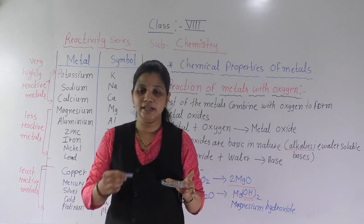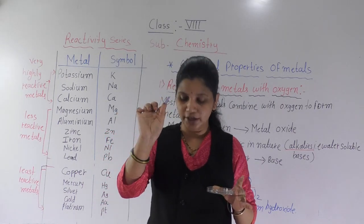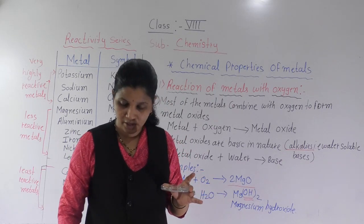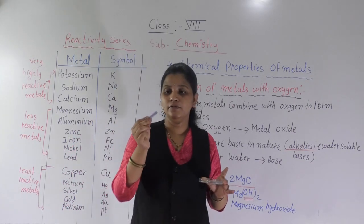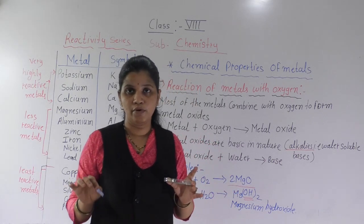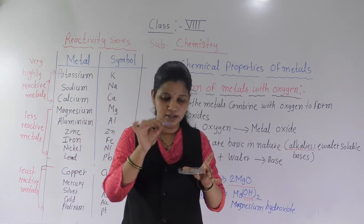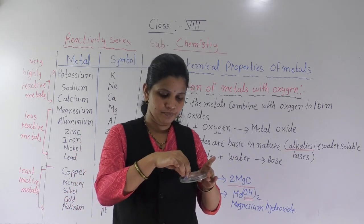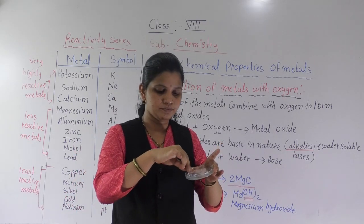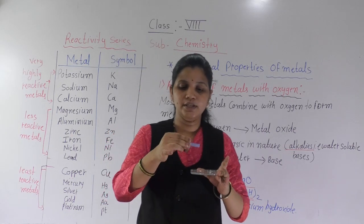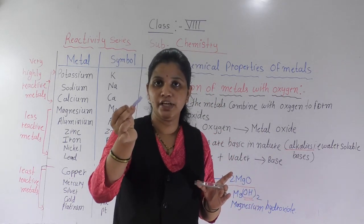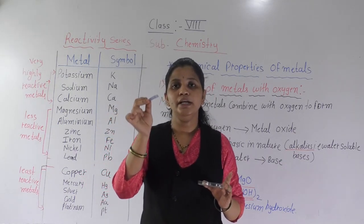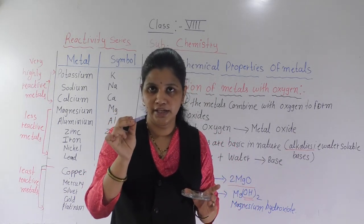Now check it with litmus paper, because it is basic in nature. This is a blue litmus paper — moist blue litmus paper. To test, we dip the paper in water first to make it moist, then check whether it is basic in nature. I dip it in this solution. See, is there any change? No. Blue litmus paper remains as it is — that means it is basic in nature.